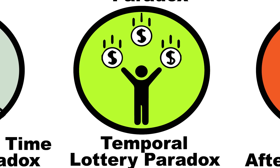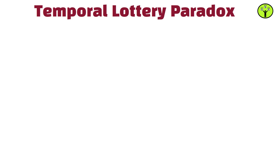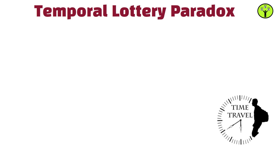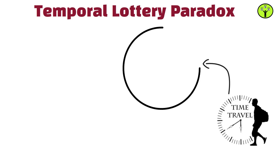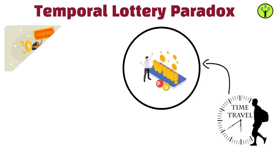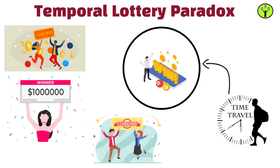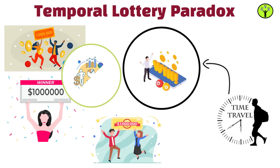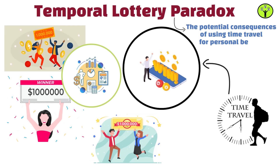The temporal lottery paradox occurs when a time traveler uses knowledge of future events for personal gain, such as winning a lottery. If many time travelers did this, it could significantly alter economic systems and the nature of probability itself. This paradox explores the potential consequences of using time travel for personal benefit.